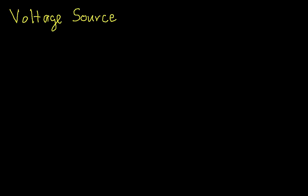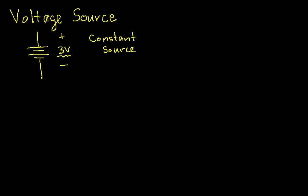We typically have two schematic symbols for voltage sources. The first one, which you've seen if you've watched previous videos, is labeled with a voltage — say 3 volts. This represents a constant source: the 3 volts the source puts out doesn't change. The origin of this symbol is the parallel plates that used to show up in batteries, which were often made of parallel plates immersed in an electrolyte, some sort of liquid. So we use this symbol for a constant source.